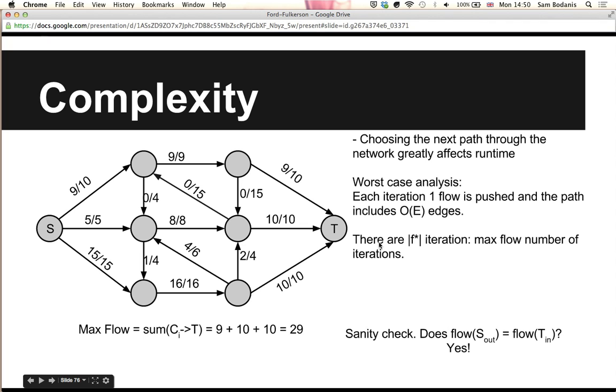And then the number of iterations will be the max flow of the network, because we only push one unit of flow on every iteration. So to reach the maximal flow, we have to perform that many iterations. So the time complexity is just number of iterations times number of work done per iteration. Thank you very much, and goodbye.